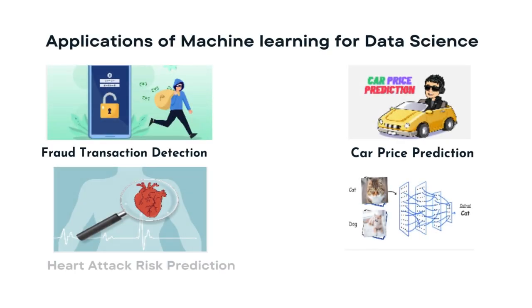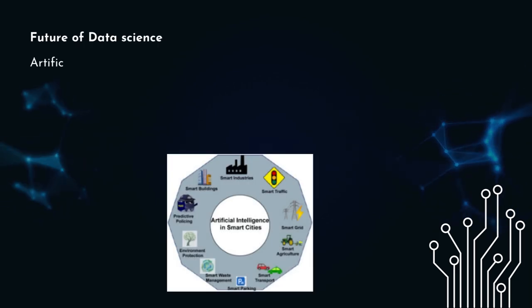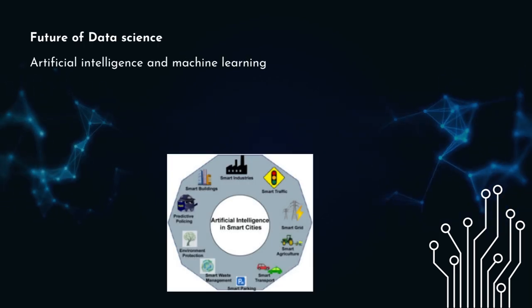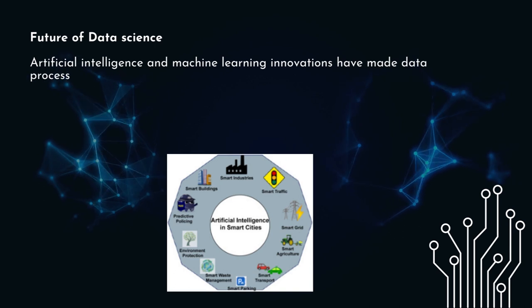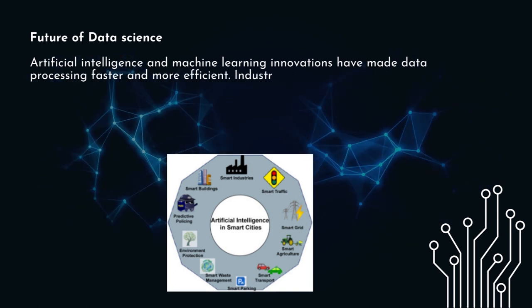Applications of machine learning for data science: fraud transaction detection, car price prediction, heart attack risk prediction, image classification. Future of data science: Artificial intelligence and machine learning innovations have made data processing faster and more efficient.